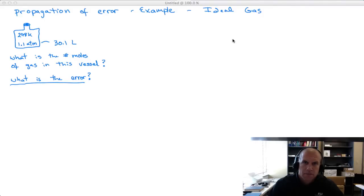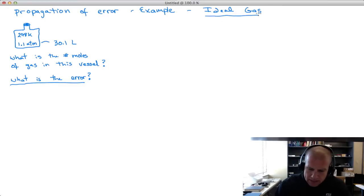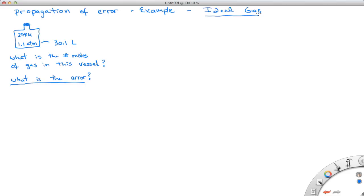Hello and welcome to another edition of PChemLab Screencast. I'm Jeff Yager and today we're going to briefly go through an example of some propagation of error.